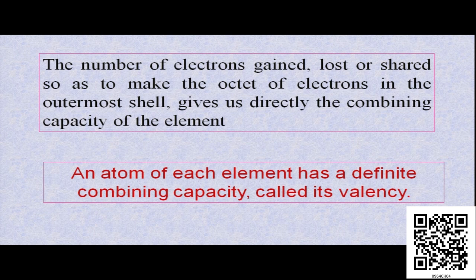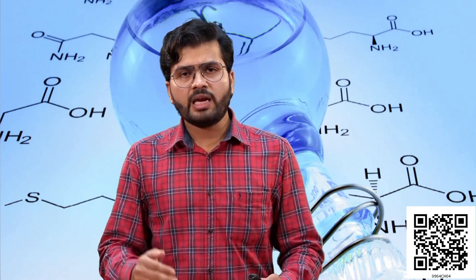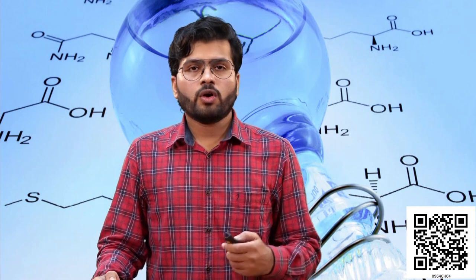Let us look at the definition on your screen. The number of electrons gained, lost or shared so as to make the octet of the electrons in the outermost shell gives us directly the combining capacity of the element. An atom of each element has a definite combining capacity which we call valency. The valency of any atom is very very important because it determines the chemical reactivity of that atom. The number of electrons present in the outermost shell will determine its valency. Valency is responsible for the chemical nature of an atom.